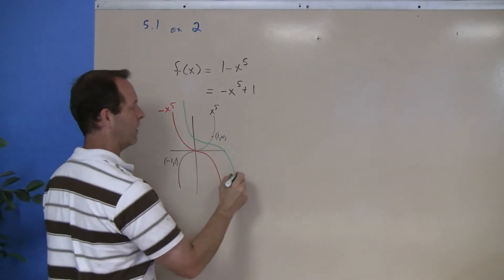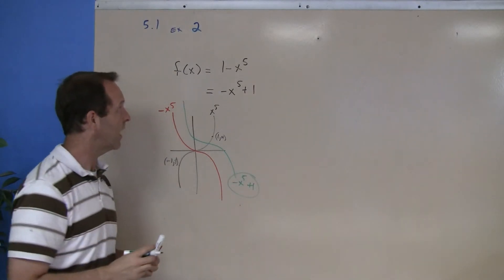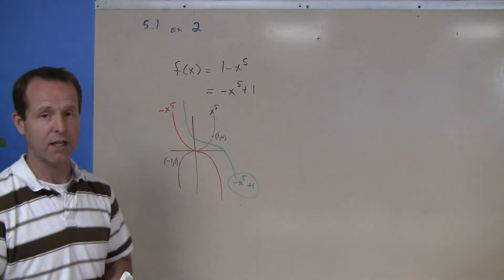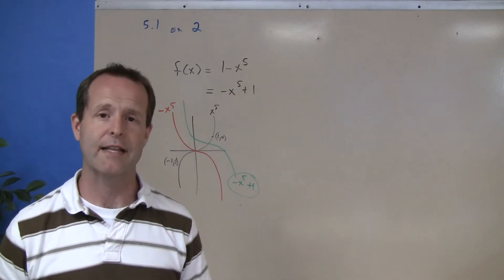So my green one then becomes negative x to the fifth plus 1. So that's the transformation of that particular function, and we're going to look at using transformations to graph lots of things.